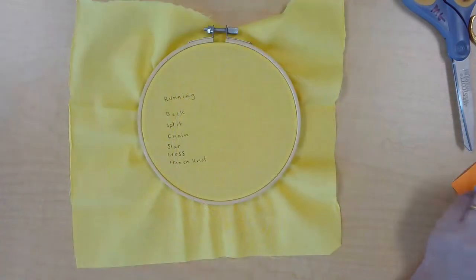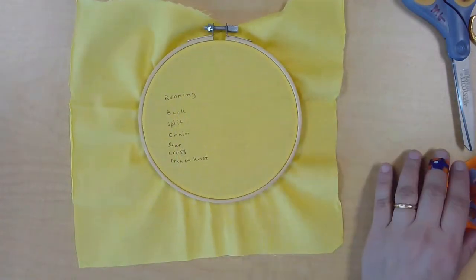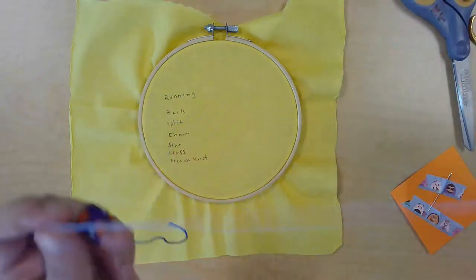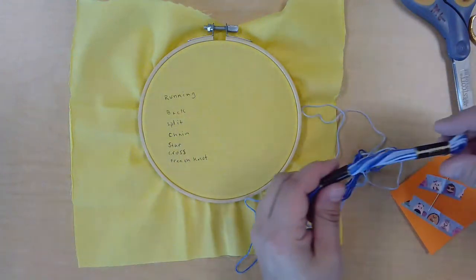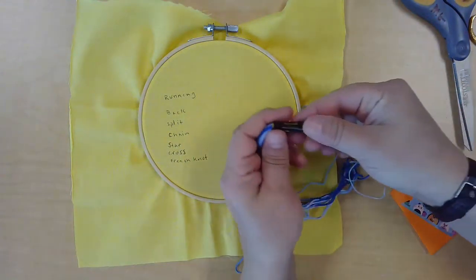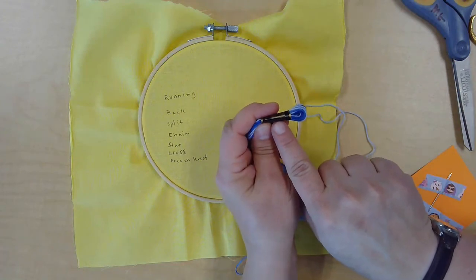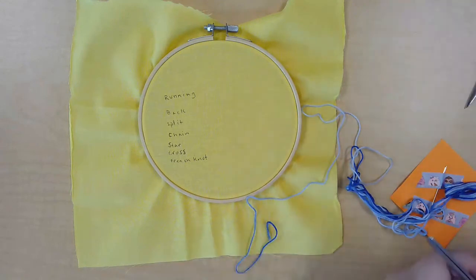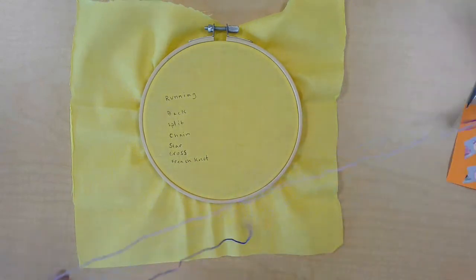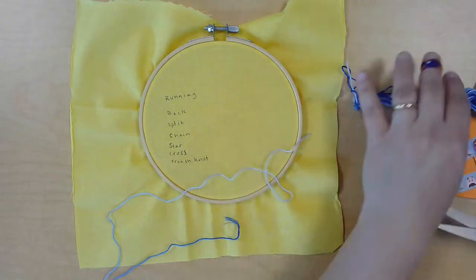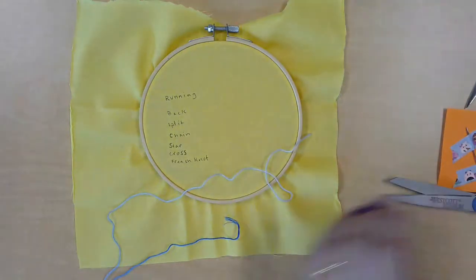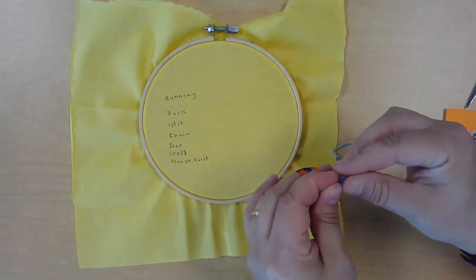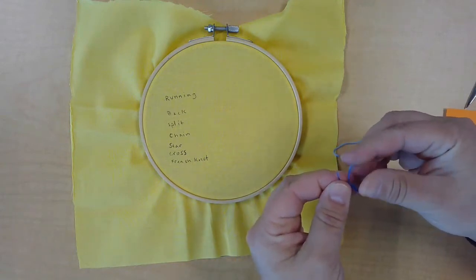All right, so once you have your fabric set in your hoop, you're going to want to thread your needle. So remember I said embroidery floss can be split into different threads. So this is a six strand skein of floss. I'm going to trim off a chunk not too long because I don't want to get it all twisted and knotted to work with to practice. And for practice purposes, I'm going to split it in half into three threads each.